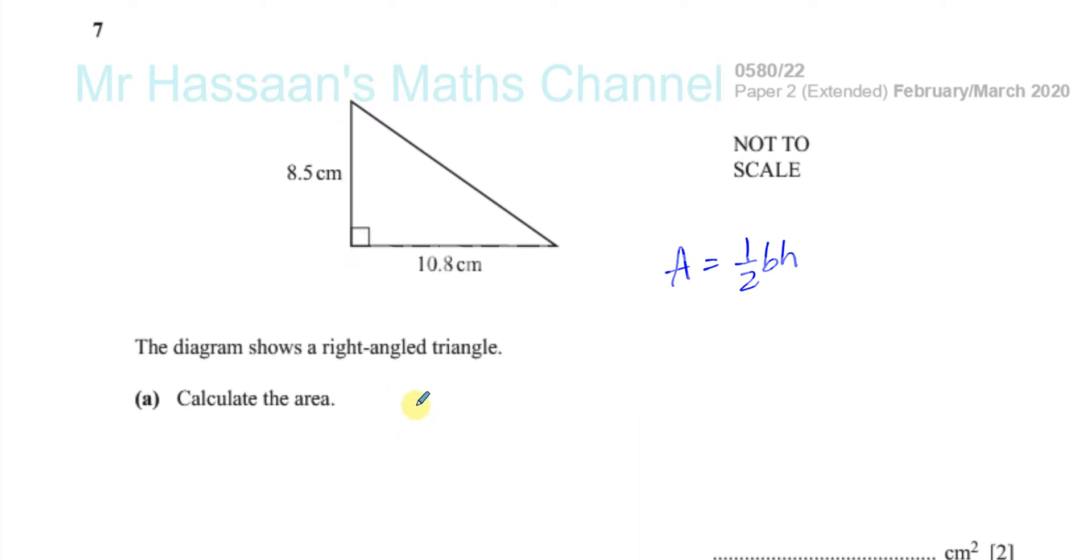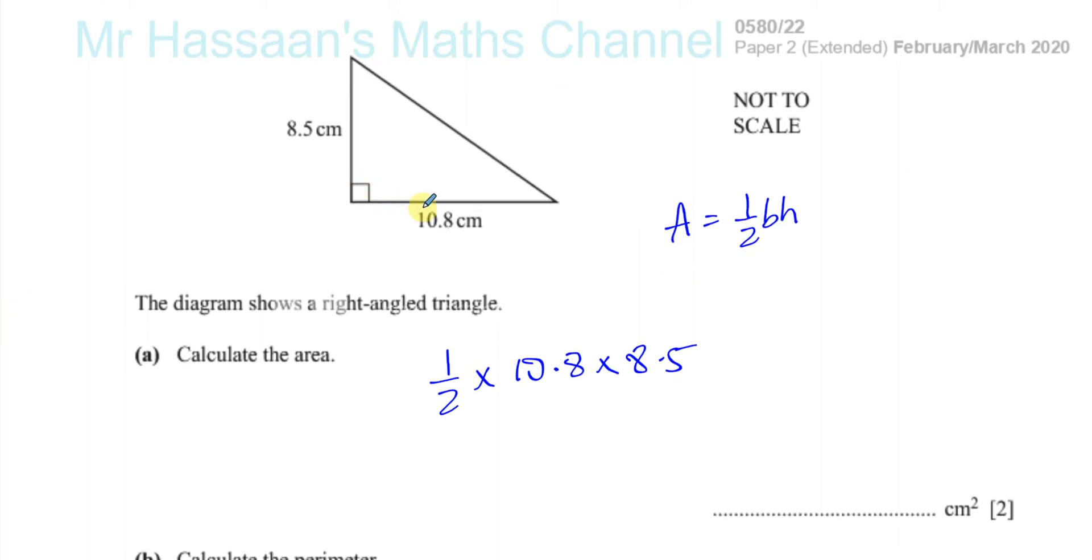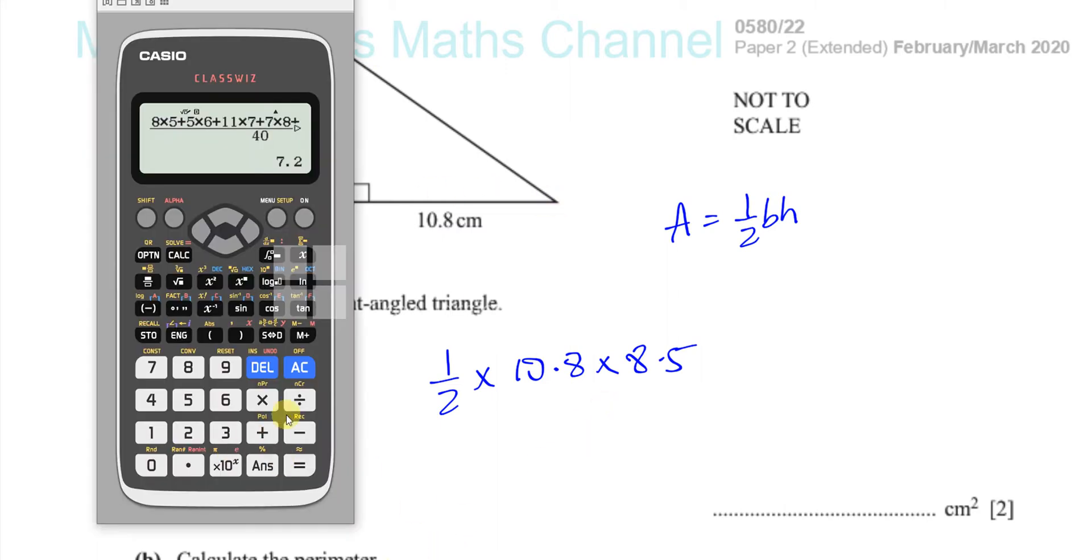So it's simply going to be a half times the base, which is 10.8, times the vertical height, which is 8.5, and there we get the area of the triangle. We could even think of this as this being the height and that being the base. As long as they are perpendicular to each other, that's perfectly fine.